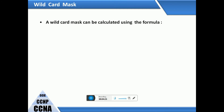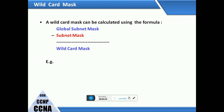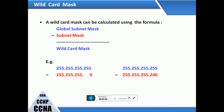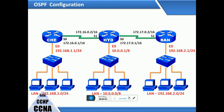The wildcard mask can be calculated using the formula: subtract the subnet mask from 255.255.255.255. For example, 255.255.255.0 subtracted from 255.255.255.255 gives a wildcard mask of 0.0.0.255. Another example: 255.255.240.0 gives a wildcard mask of 0.0.15.255.